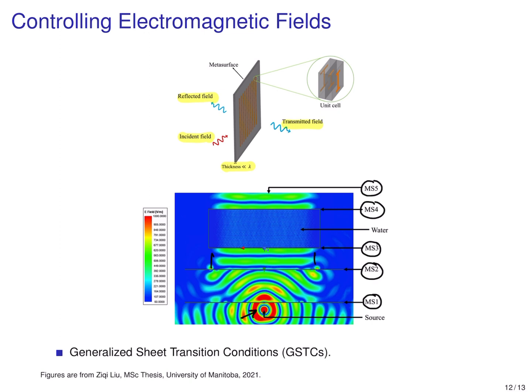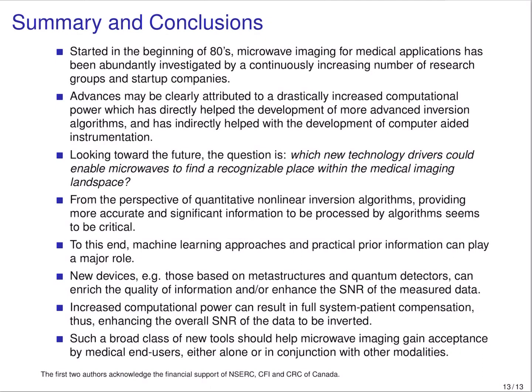If meta-surfaces are incorporated into microwave imaging systems, they also need to be incorporated into the nonlinear inversion algorithm. One way to do that is to represent them using generalized sheet transition conditions (GSTC), which represent the boundary conditions associated with these meta-surfaces. In summary, looking toward the future, from the viewpoint of nonlinear inversion algorithms, a major driving factor is providing the inversion process with more information. Machine learning and incorporation of prior information can be regarded as methods to provide more information. Devices based on meta-surfaces and quantum detectors may enrich the quality of information and enhance the signal-to-noise ratio. Increased computational power is also always helpful to decrease modeling error.